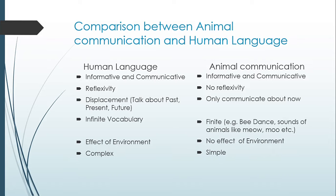Humans have an infinite stock of vocabulary — I use many different words even in a single conversation. But animals have finite vocabulary. For example, cats only meow, cows only moo, and crows only crow. Even bee dance, which was once considered an exception, was found to have similar repetitive moves. Animal vocabulary is fixed and finite, whereas human language continuously adds new words over time.